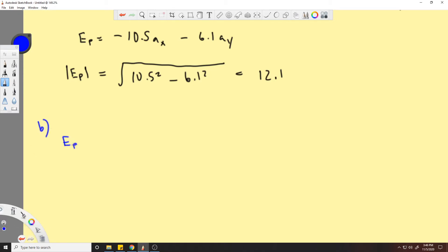Remember, any unit vector is the vector in question over its magnitude. Okay, the vector in question is right here: -10.5 in the x direction minus 6.1 in the y direction, and you divide that by 12.1.